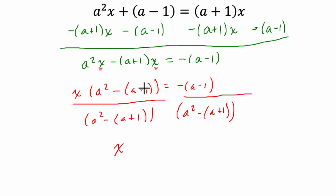So on the left-hand side, these cancel out. Anything divided by itself except for 0 is 1. And on the right-hand side, we have minus a minus 1, so we're going to distribute the negative sign, negative a, plus 1. And then here, it's over a squared minus a minus 1.